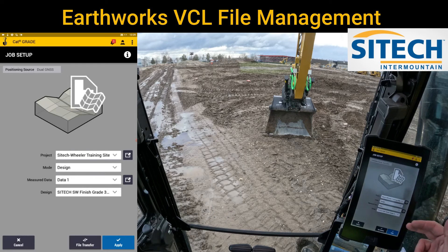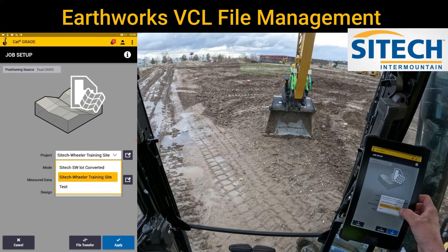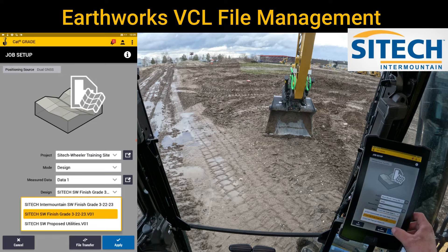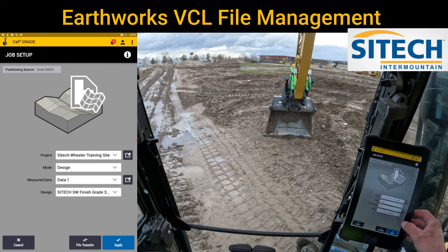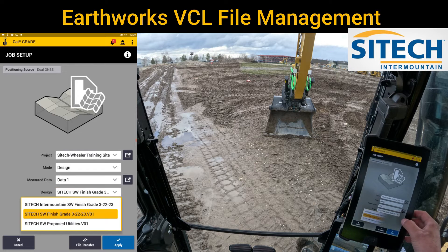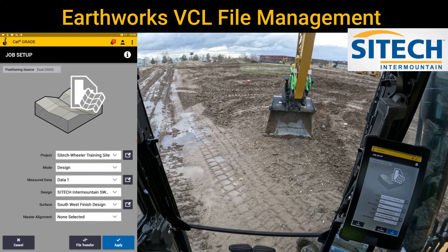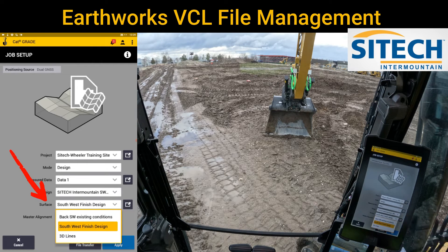In my job setup, I've got my project from the SiteTech Wheeler training site design. Down here, if I stay on a design, that's just a finished grade - that's not a VCL. Down here where I've got 3D line work, I don't have any other options. But if I change to the VCL file, now it comes with different options because the VCL file came out with three different surfaces. I can now click in here and go between an existing condition topo, a finished grade design, and 3D lines - all on the same one.